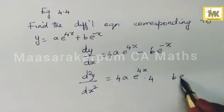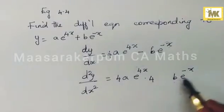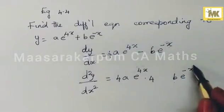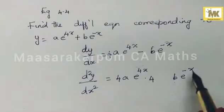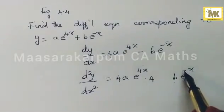Then b e to the power minus x: b stays, the exponential function differentiates to itself, and minus x differentiates to minus 1.